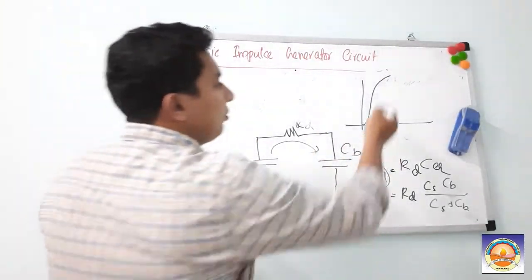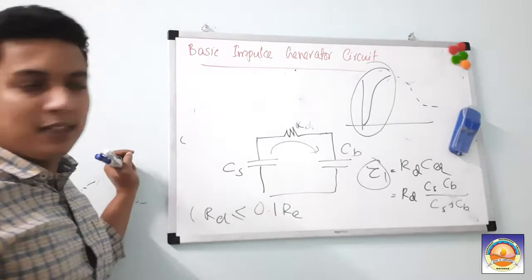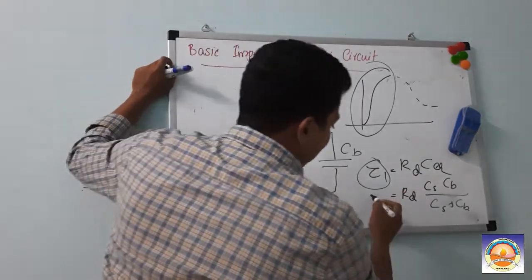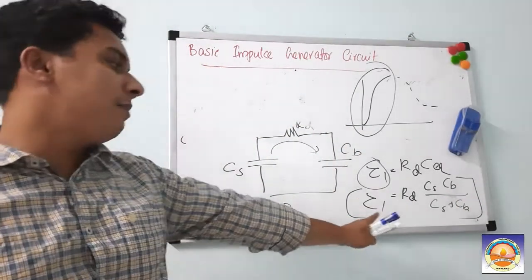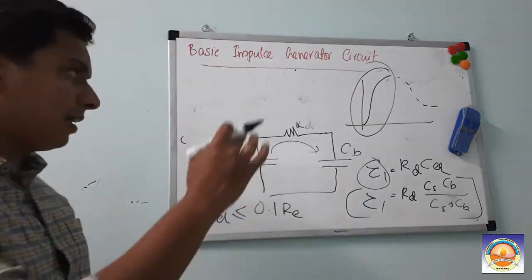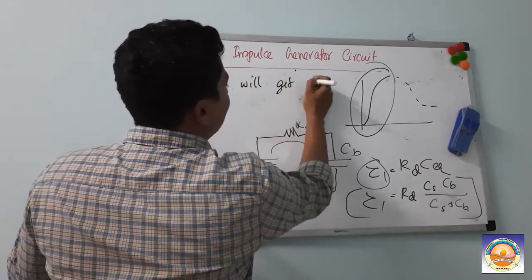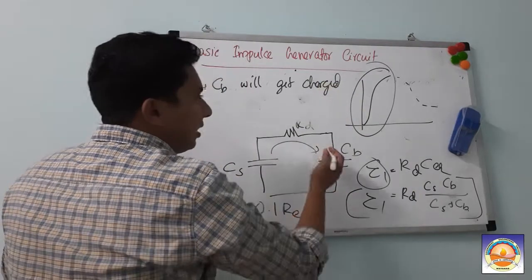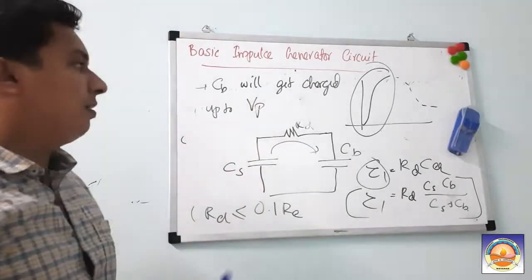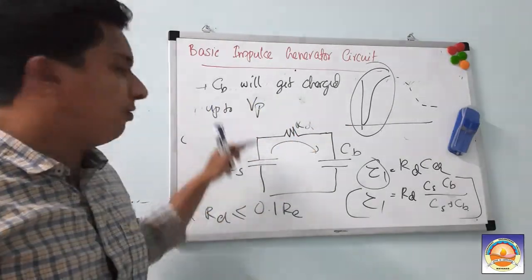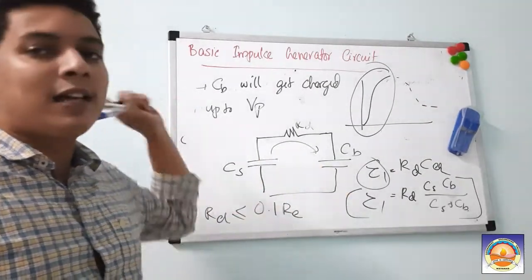In the impulse voltage waveform, this charging process creates the first initial rising part of the wave. Your CB gets charged up to a maximum voltage Vp — the peak value. Once the peak value is achieved, afterwards both CS and CB will get discharged through your RE.